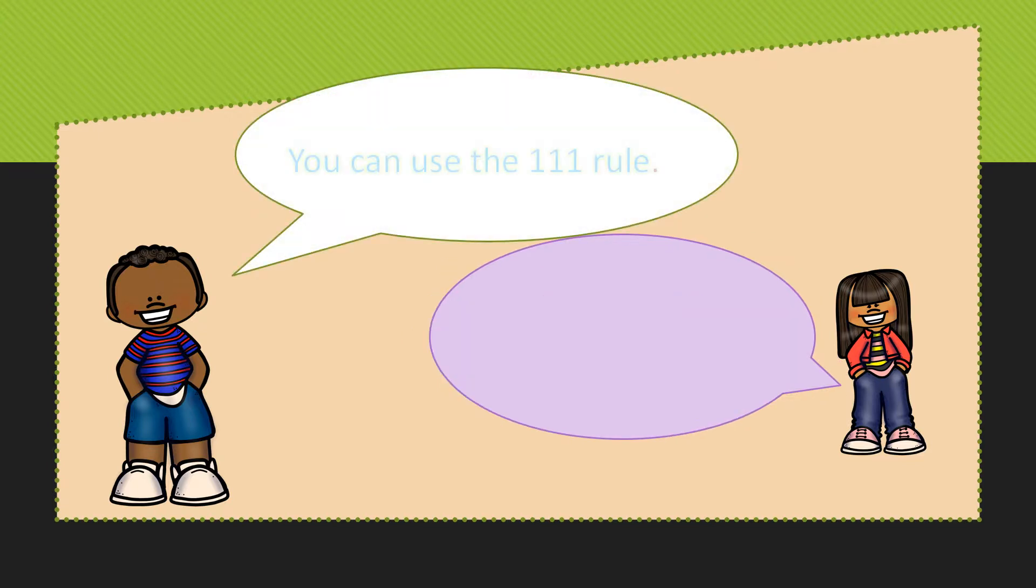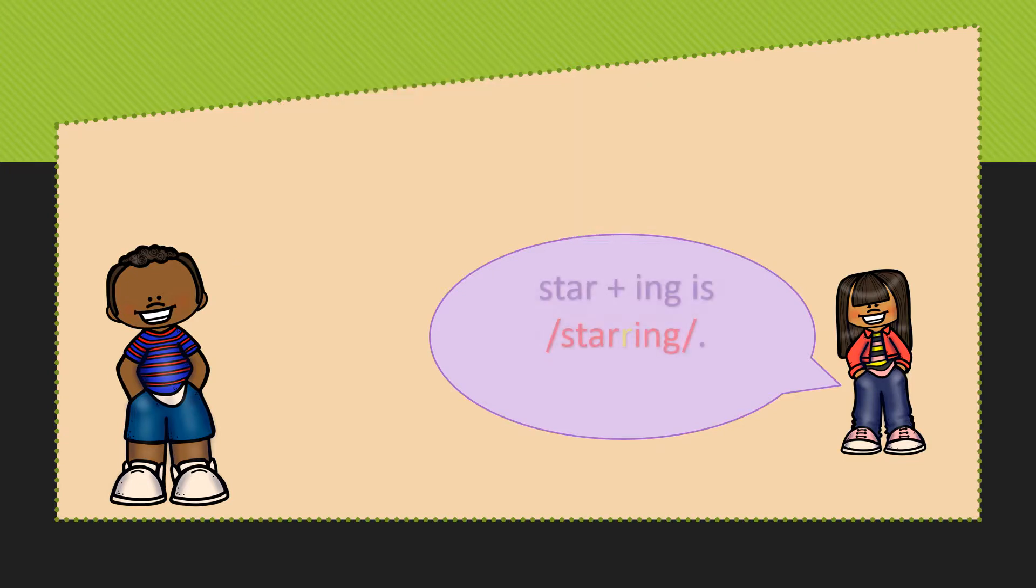You may need to use the one one one rule with an R controlled base word when adding a suffix to it. Here we have the word star. Star has one syllable, one vowel, one consonant after the vowel, and we're adding a vowel suffix, I-N-G.